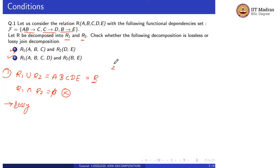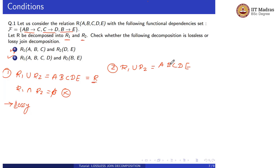Now let us check the second decomposition. First condition: R1 union R2 equals A, B, C, D, E which equals R. First condition is satisfied. Second condition: R1 intersection R2 is B, which is not equal to the empty set. So the second condition is also satisfied.